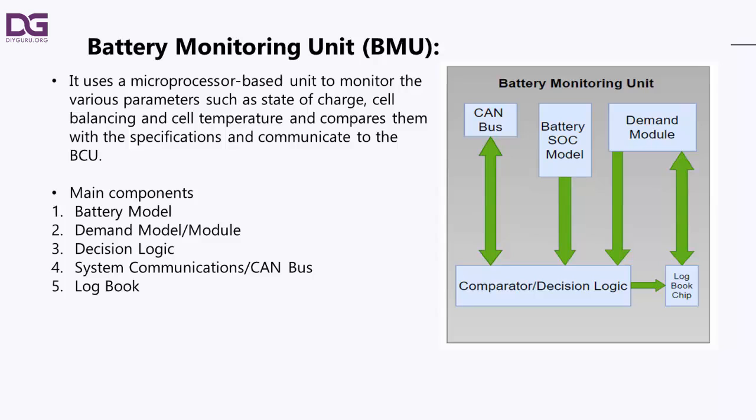The BMS needs a communication channel for passing signals between its various internal functional circuit blocks. It must also interface with several external vehicle systems for monitoring or controlling remote sensors, actuators, displays, safety interlocks, and other functions. Automotive BMS therefore uses the CAN bus as its main communication channel. The system should also include provision for standard automotive onboard diagnostics (OBD) with diagnostic trouble codes (DTC) made available to the service engineer.